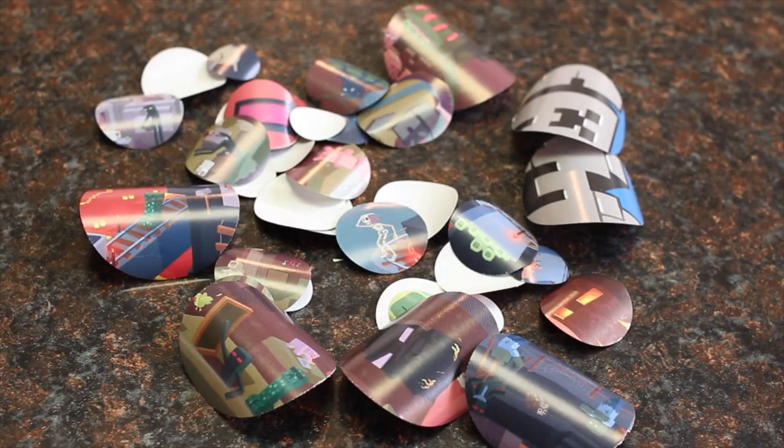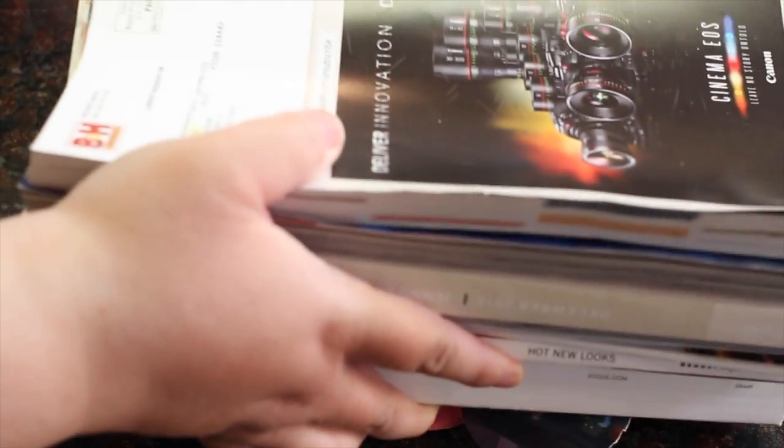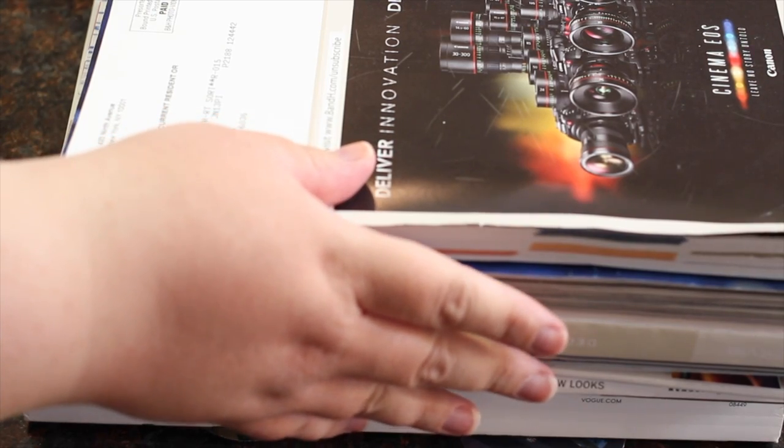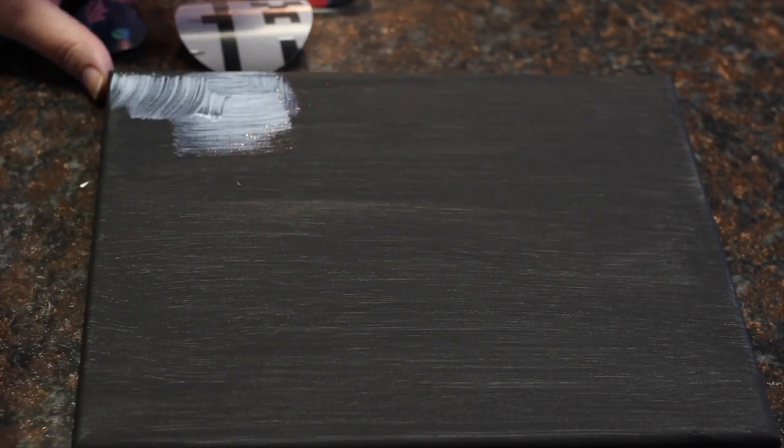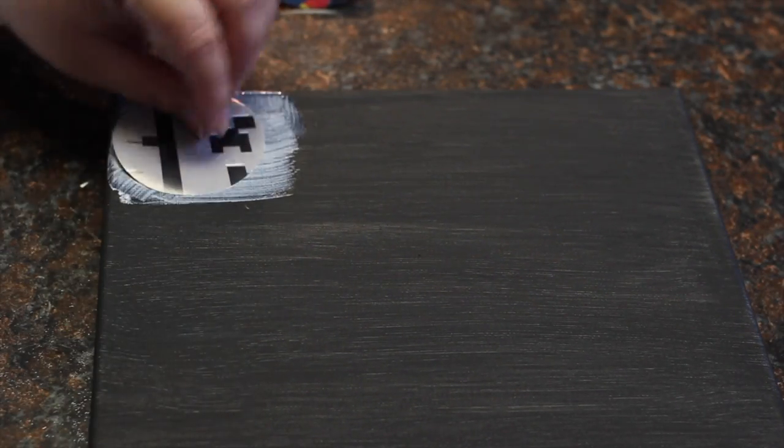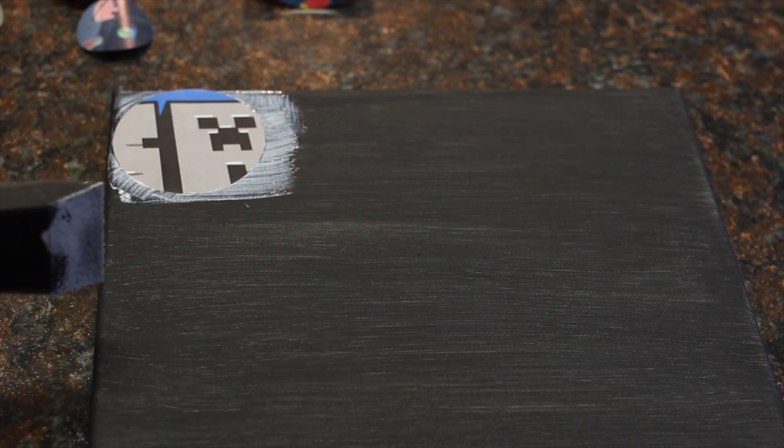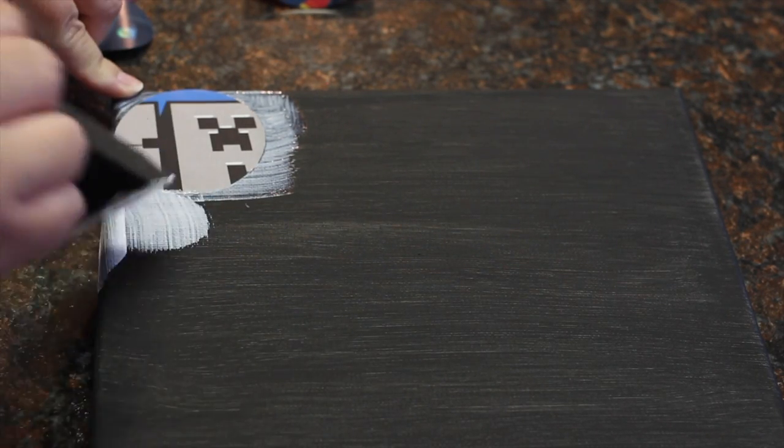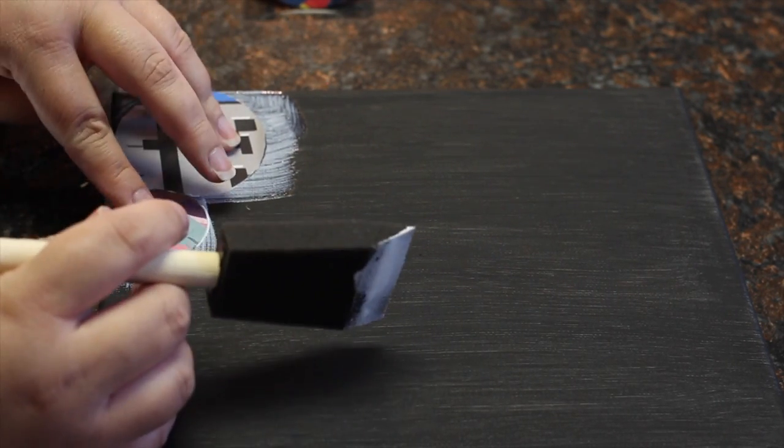If your circles are bent, you can flatten them with some weighted pressure like a bunch of magazines or books. When the paint is dry, glue your circles to the canvas. You can do it in a pattern or randomly. While you're gluing your circles down, go back and make sure that the edges are staying down.